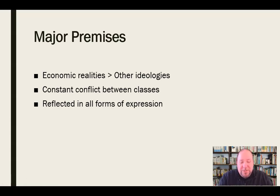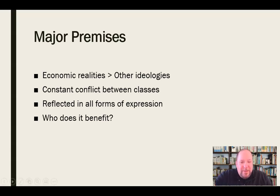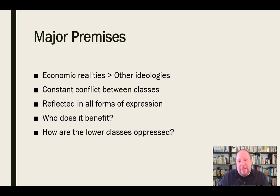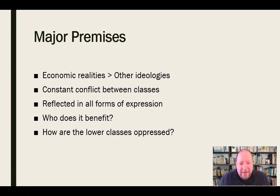Some of the main questions asked through the Marxist lens: first, who does this benefit? That's always at the core. Who does this piece of art, news, or media benefit? And then, how are the lower classes oppressed? There's almost a preset view that the lower classes are being oppressed — how is it happening in this media? How is it represented in media that was clearly not created by people in the lower class, but by people in the upper class? In what way is this artifact oppressing the lower class?